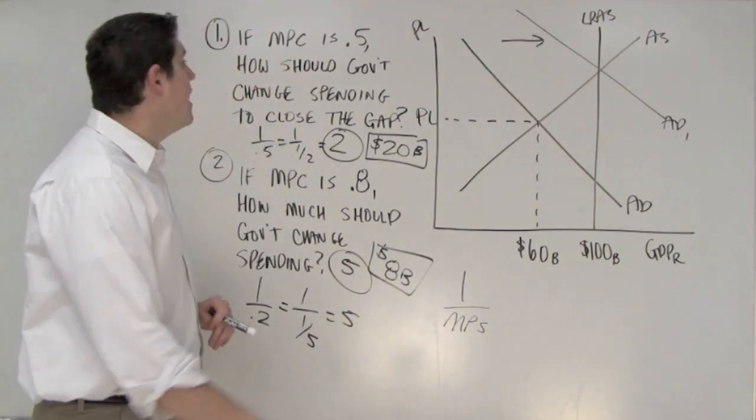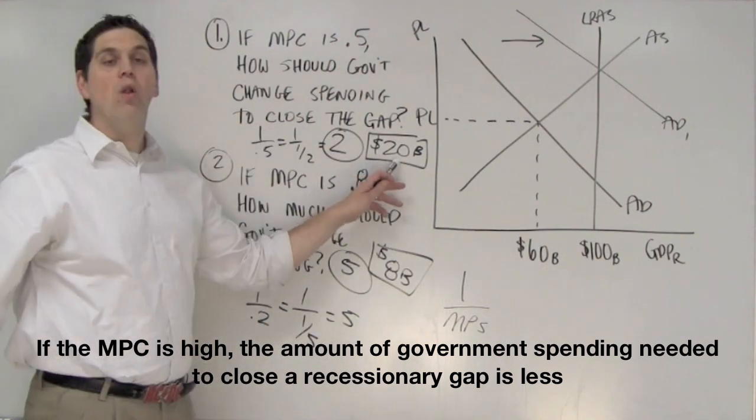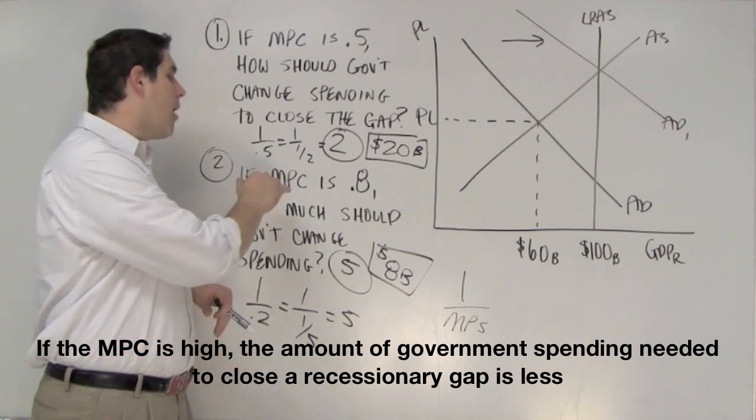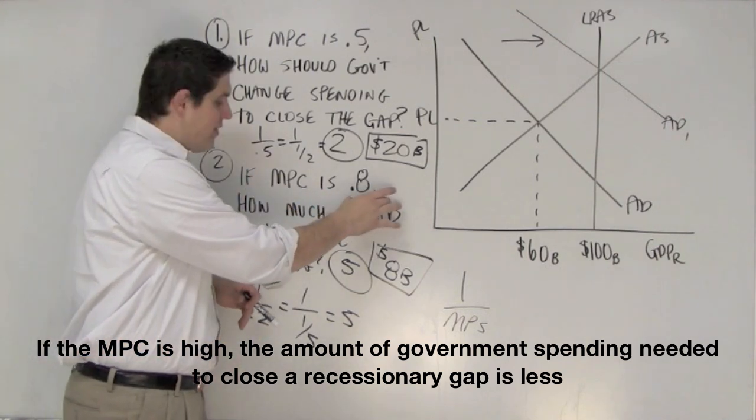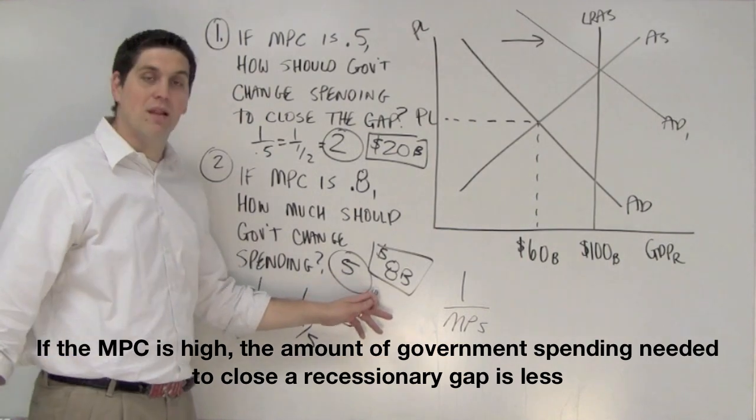Look at the logic of it. If people only spend half of it, we've got to spend a whole lot more than if people spend 80% of it, right? So if the marginal propensity to consume is higher, that means the amount that we have to spend in government spending to close the gap is going to be a lot less.